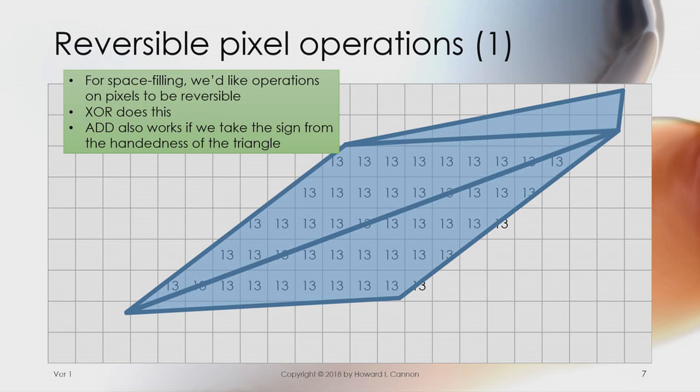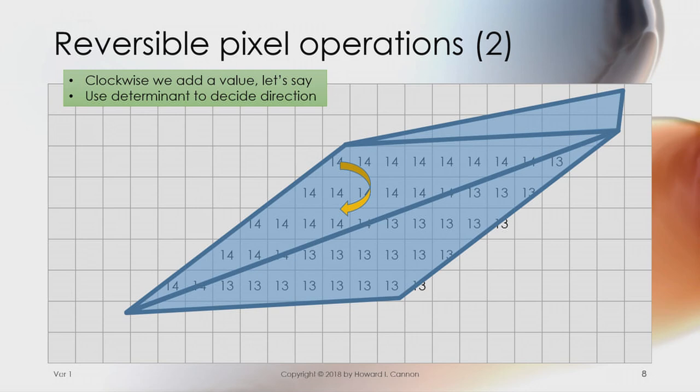But we can also use add, because that essentially conserves information. And if we take the sign from the handedness of the triangle, as determined by its determinant, then we can just draw some nice things and things erase and add and subtract as they should. So if we go clockwise, we add, we get those ugly 14s, and then we get the 13s back and we go counter-clockwise.